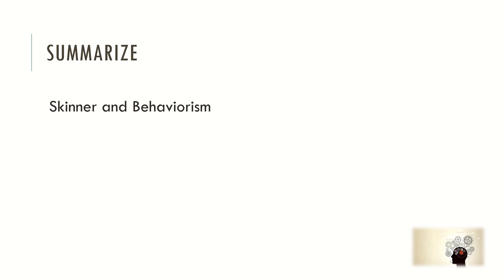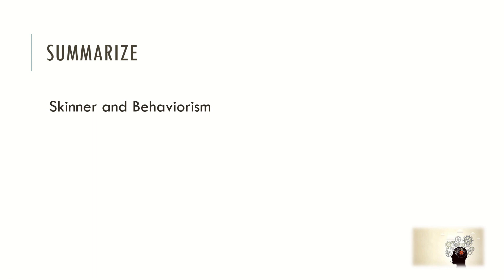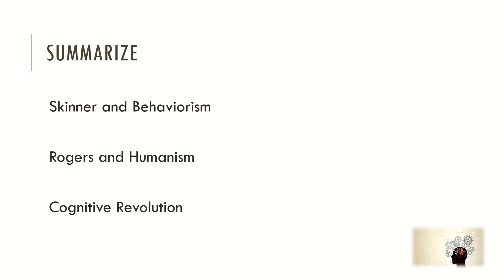Behaviorism was focused on making psychology an objective science by studying overt behavior and de-emphasizing unobserved mental processes. John Watson is often considered the father of behaviorism, and Skinner's contributions to the understanding of operant conditioning cannot be underestimated. The humanistic approach focused on self-actualization and human potential — Maslow and Rogers were very influential in shaping humanistic psychology. In the 1960s, the cognitive revolution changed psychology forever by focusing on the cognitive processes underlying information processing.